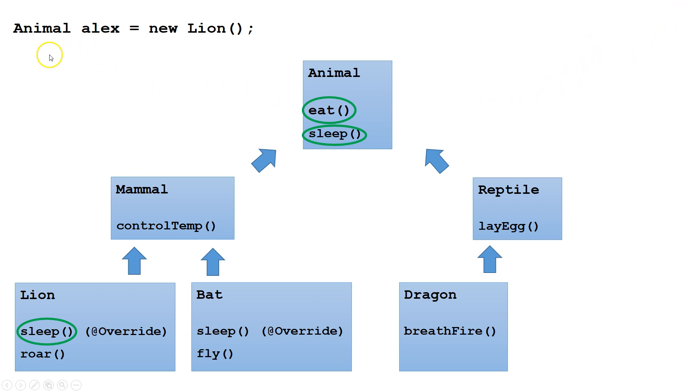However, since alex is an Animal, it won't be able to access methods that didn't originally exist in some form in Animal. For example, controlTemp does not exist in Animal, so it won't be able to be accessed by the variable alex. Also, roar never existed in Animal, so we won't be able to access it from the variable alex, which is an Animal.